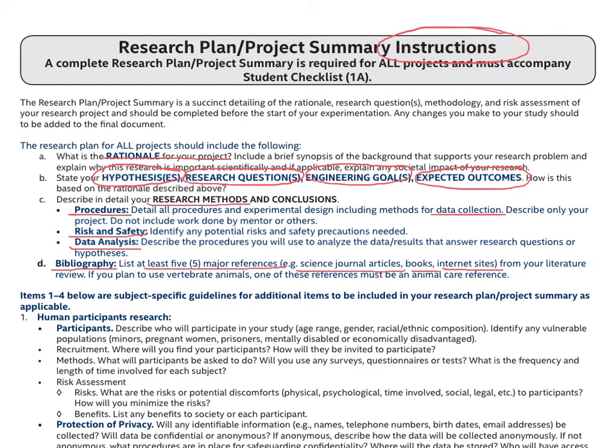For internet sites, it's important to include in your bibliographic reference when you accessed the website and what was the web address for the website itself. You cannot have all five major references as internet sites. Instead, some of your references should be from books or science journals.